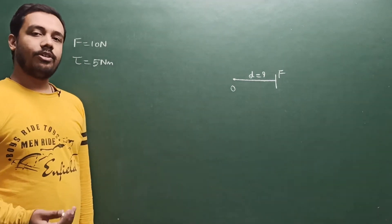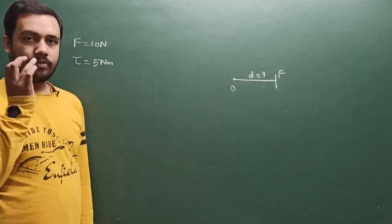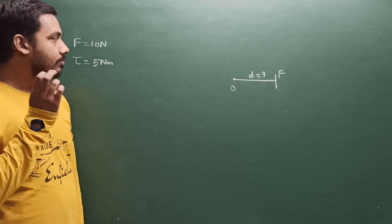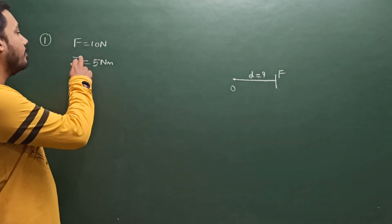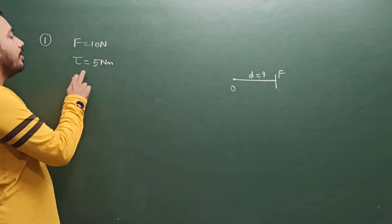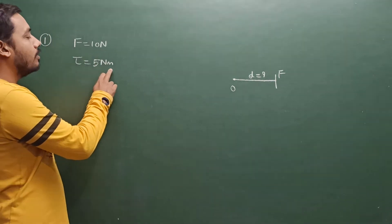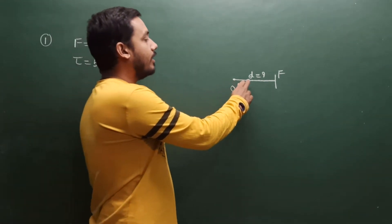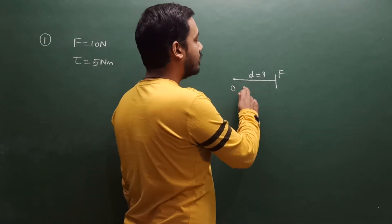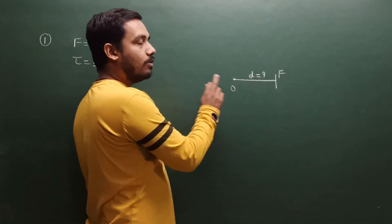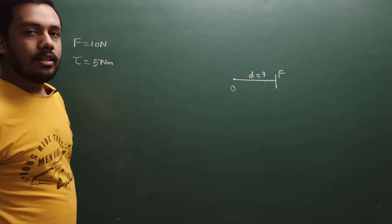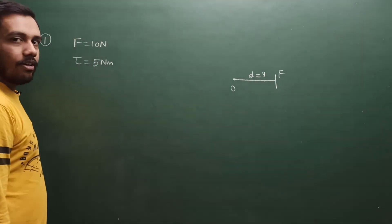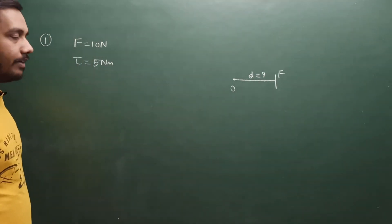This is the first numerical question of chapter 1. There is a force of 10 Newton and the moment of force is 5 Newton meter. You have to calculate the perpendicular distance of the force from the point of pivot.